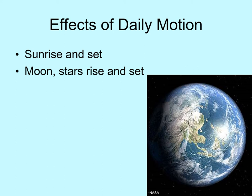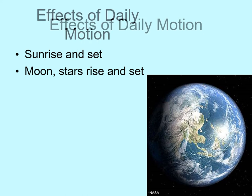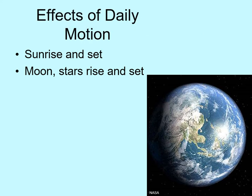Have a look at the globe and try to imagine which way the Earth is spinning to make this happen. If the Sun appears to move to the west, then we must be spinning towards the east.